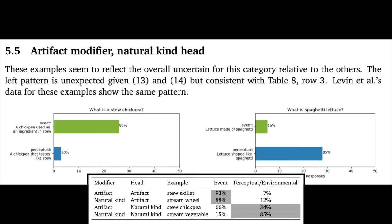Moving to artifact modifier, natural kind head, recall that this was the most uncertain category for Levine et al. It's arguably the one where we see a lot of reversals of the expected pattern given our overarching hypotheses. For what it's worth, spaghetti lettuce on the right behaves as we expected with mostly perceptual readings. However, stew chickpea saw more eventive readings. And this might be because my gloss on the perceptual one isn't so plausible. It says, a chickpea that tastes like stew. Perhaps keying into the color or consistency of stew would be more plausible.